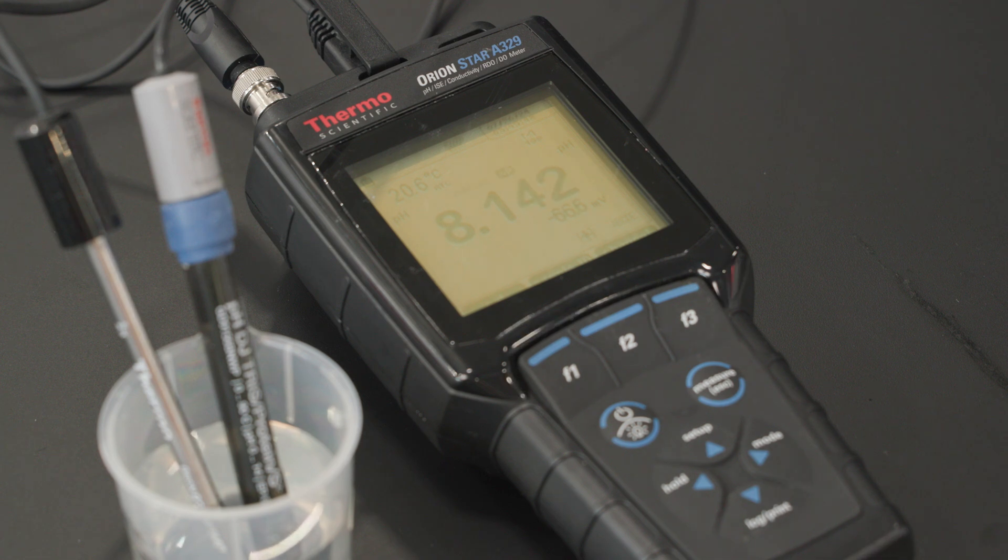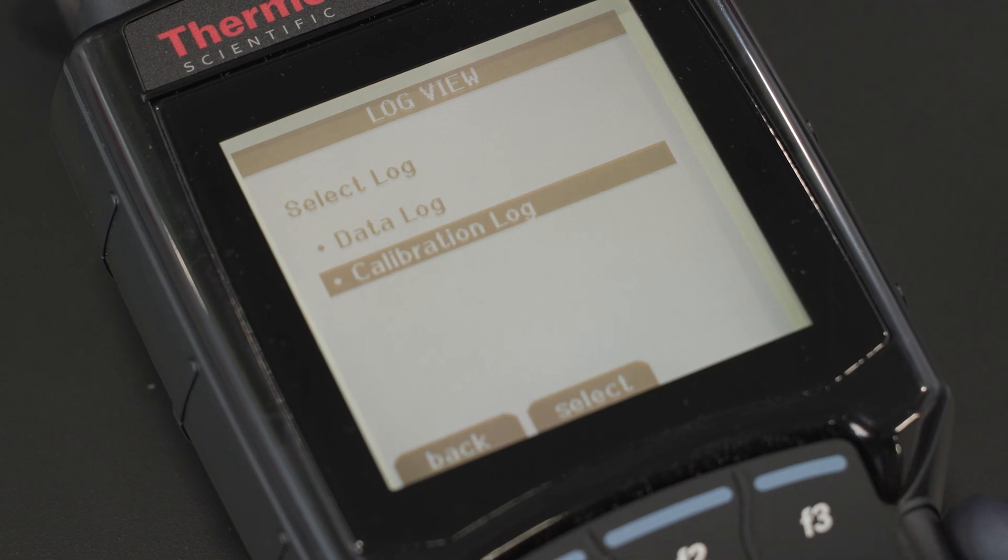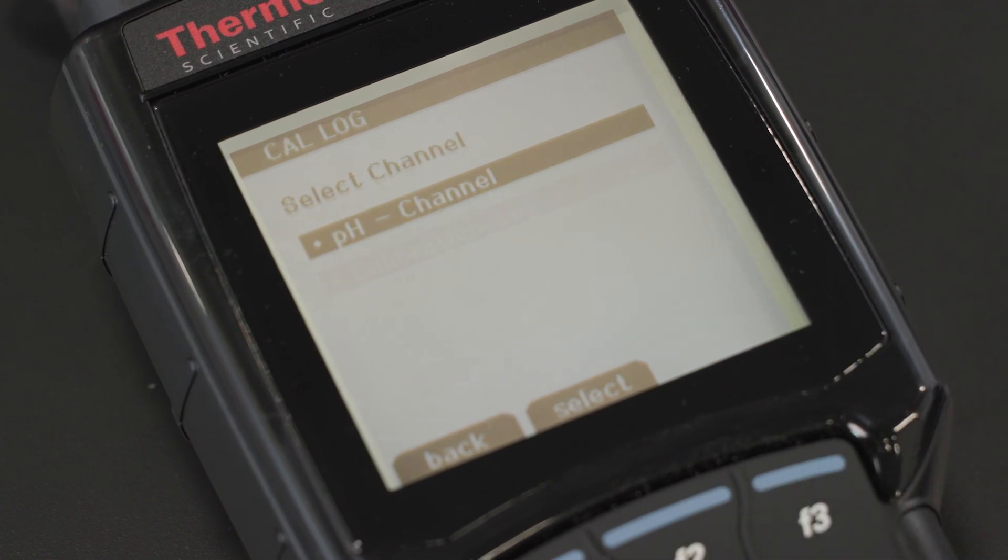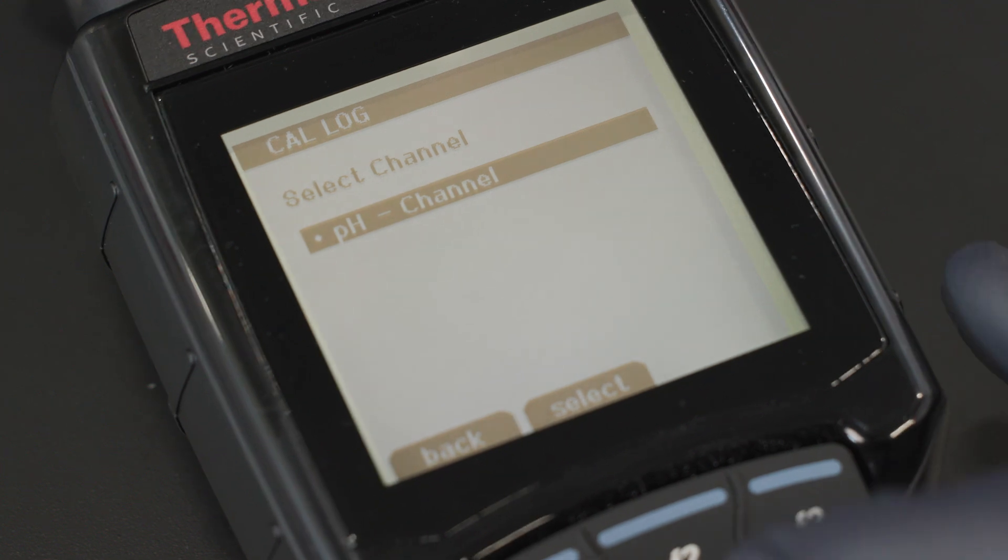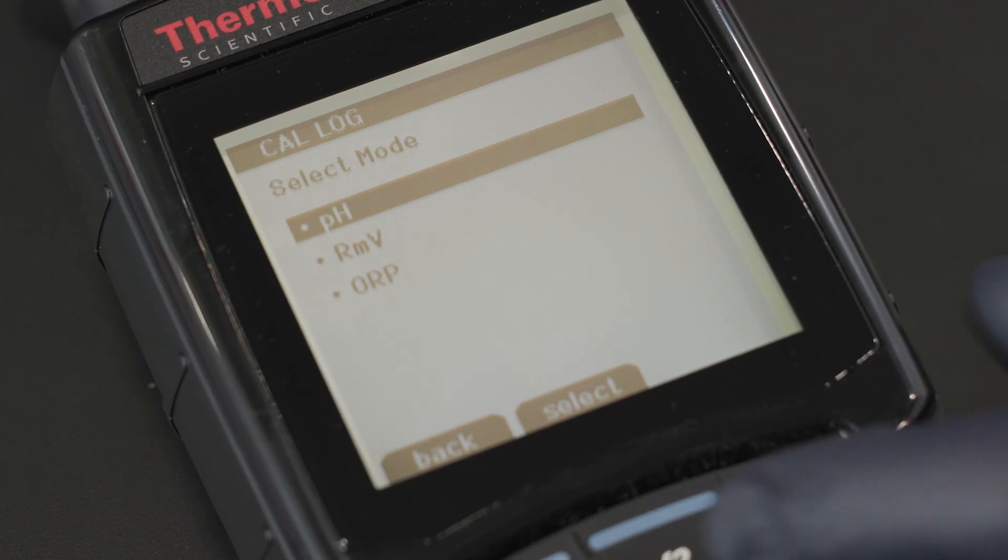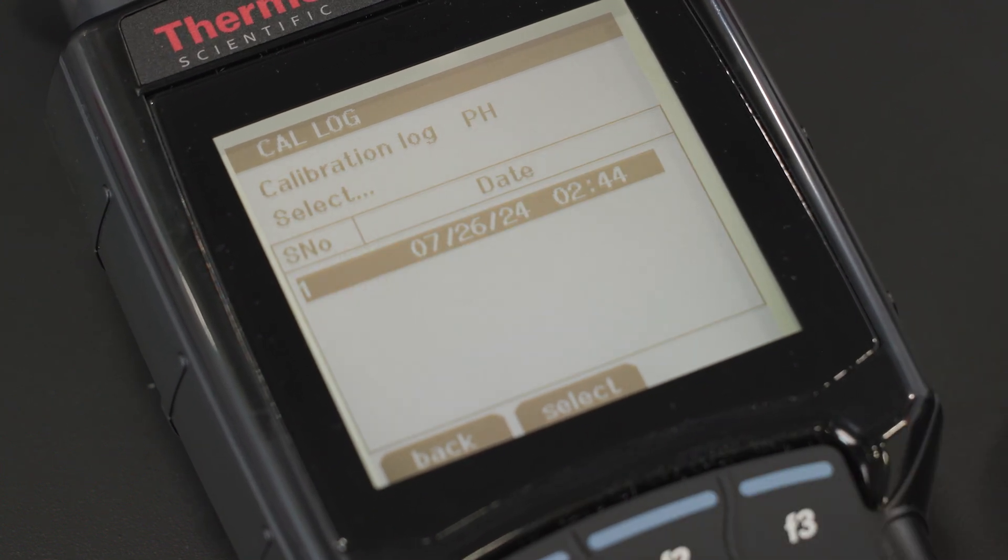The calibration log keeps a record of calibration details such as dates, times, calibration standards, measured values, and calculated values. It provides a traceable record for quality control and compliance purposes.